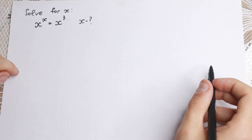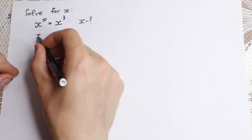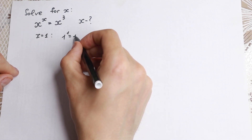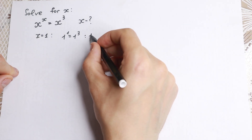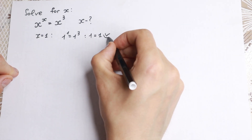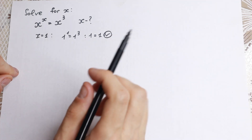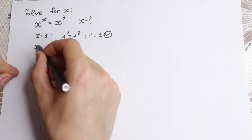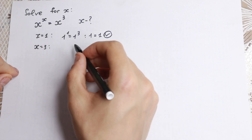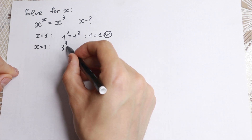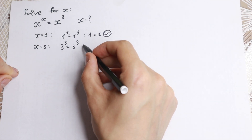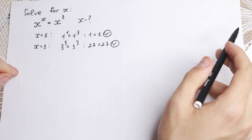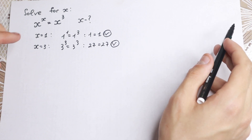How can we solve this interesting problem? By inspection, x equals 1 is a root, because 1 to the power 1 equals 1 cubed, which is correct since 1 equals 1. Also by inspection, x equals 3 is a solution as well — we have 3 cubed equals 3 cubed, which means 27 equals 27, which is absolutely correct. So we find two roots by inspection.